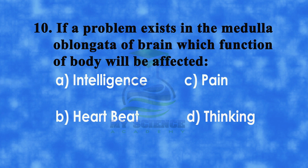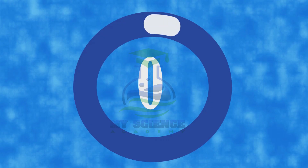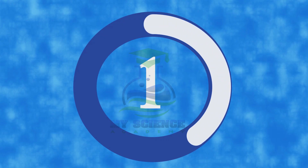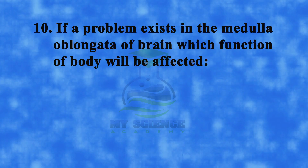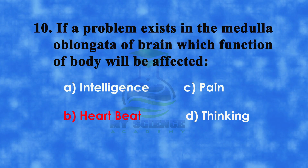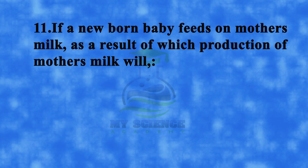Number 10: If a problem exists in the medulla oblongata of brain, which function of body will be affected. A: intelligence, B: heartbeat, C: pain, or D: thinking. And correct answer is B: heartbeat.